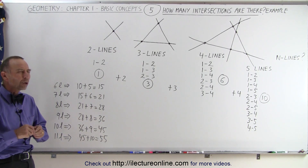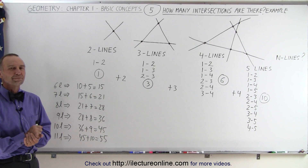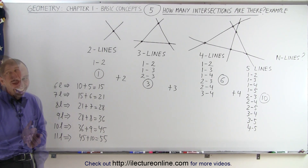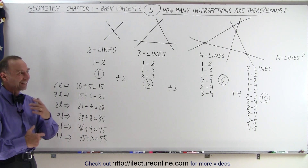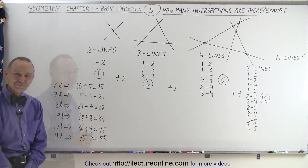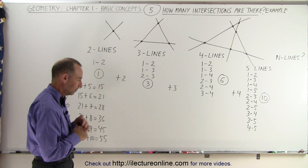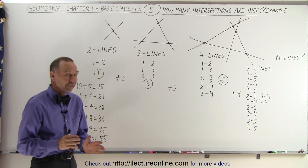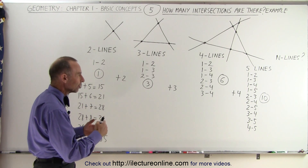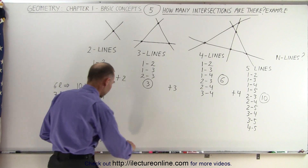So can we come up with an equation that shows us, with n lines, how many intersections there are? I need some time to work that out — I threw that in there and forgot I hadn't done it yet. So now we need to figure out how many intersections there are when we have n lines, and I believe I see a pattern with these numbers, so let's take a look.